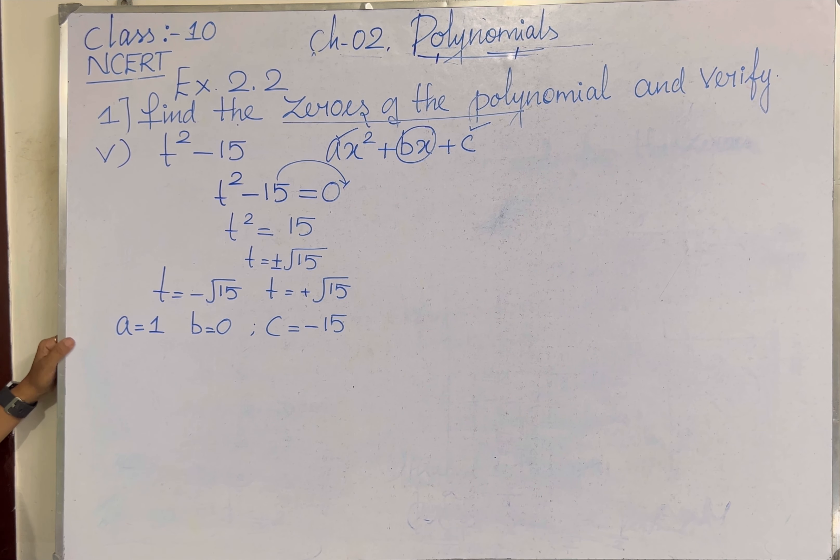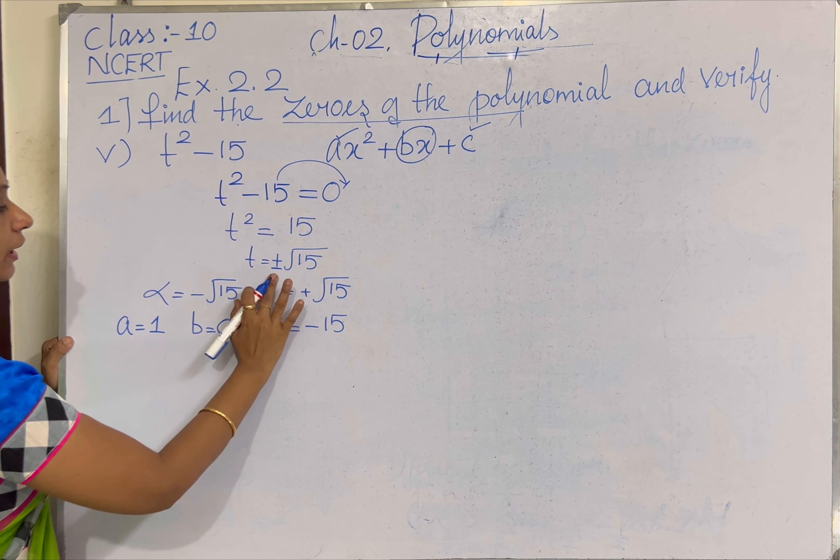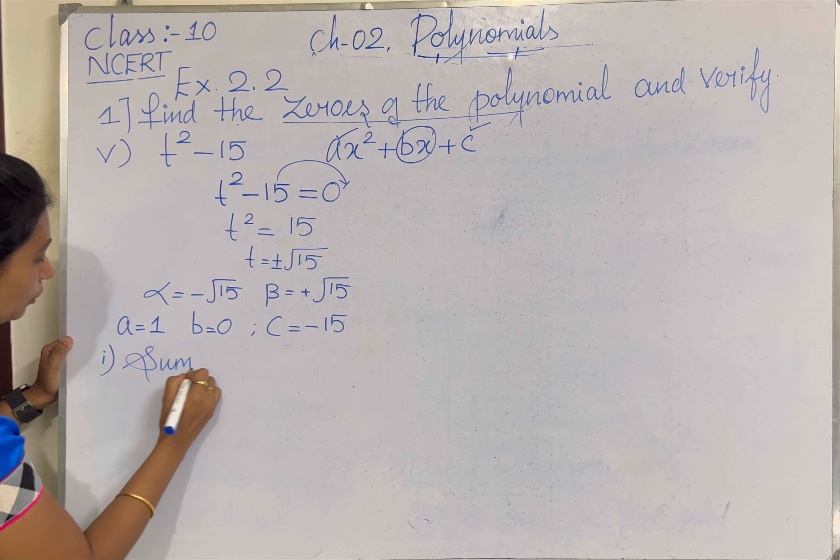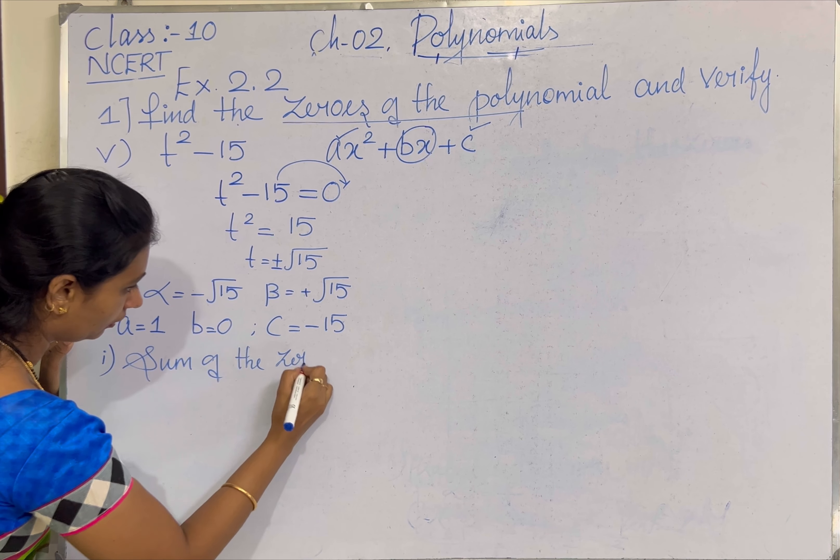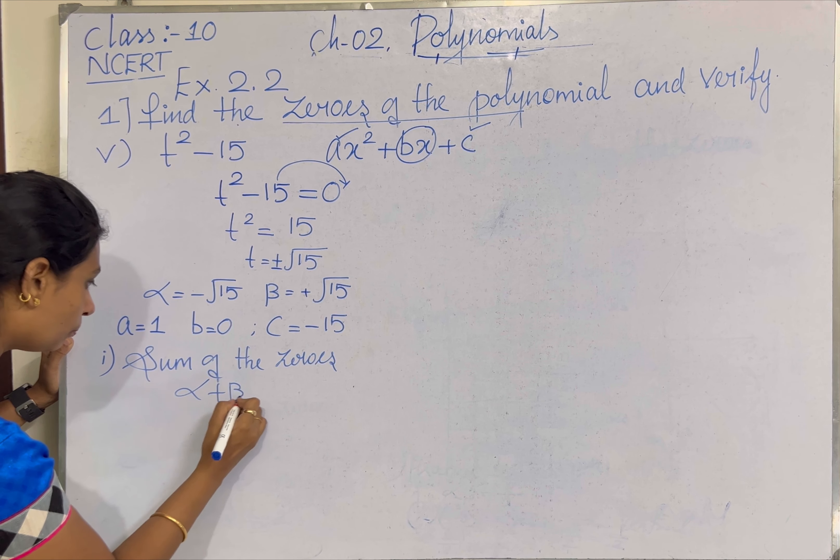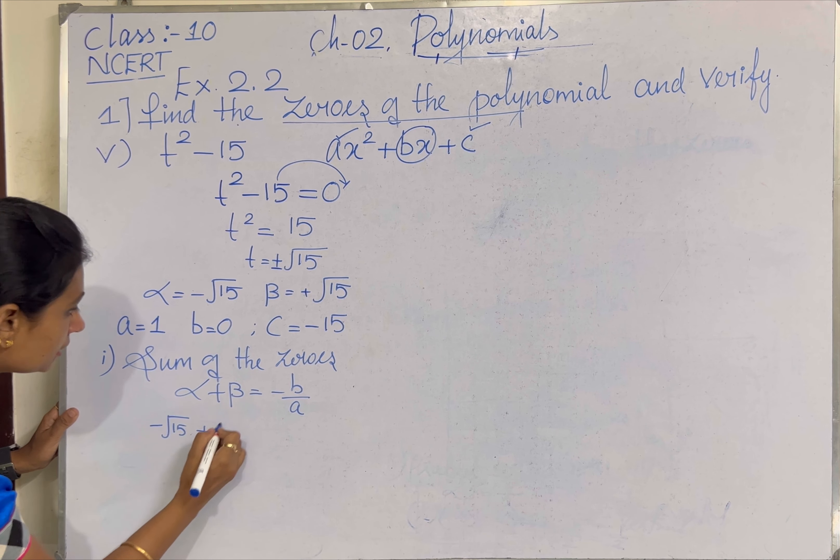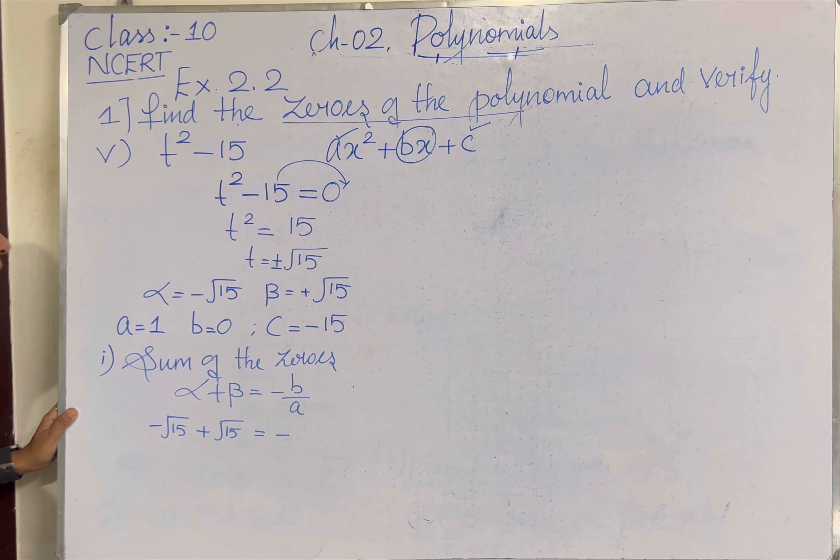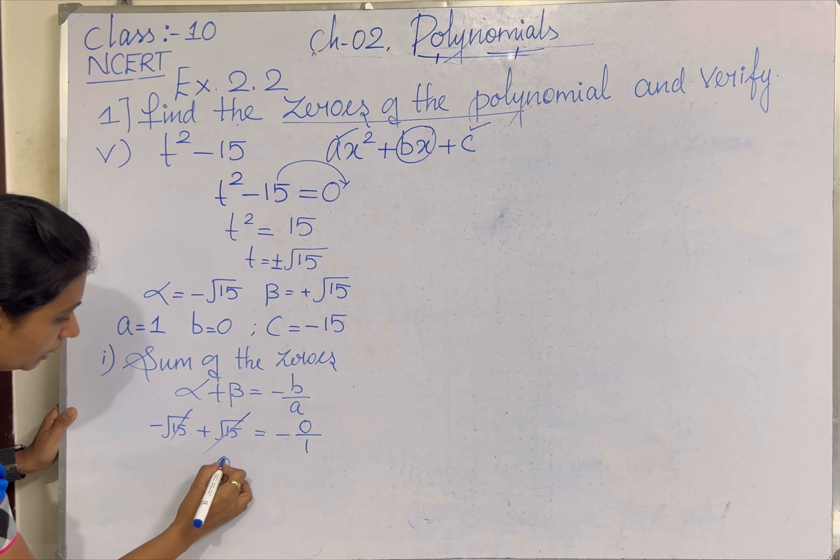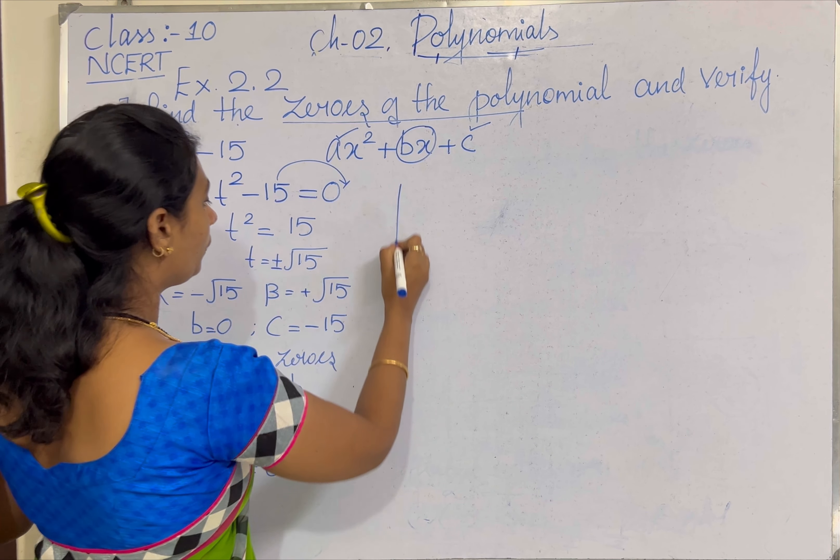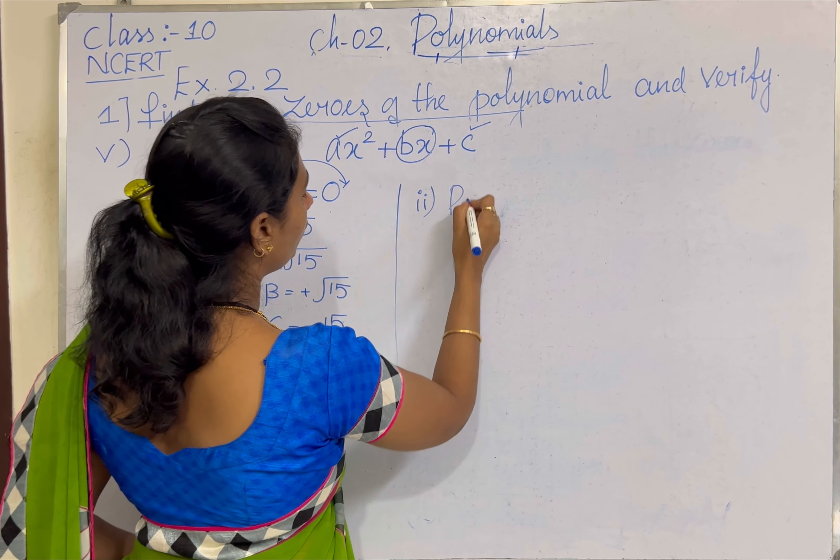We need to verify the relationship between alpha, beta and the coefficient of the polynomial. First thing we need to verify is sum of the zeros. Alpha plus beta equal to minus B by A. So minus root 15 plus root 15 equal to minus B value 0 divided by A value 1. Plus root 15 minus root 15 will become 0 on the left hand side. 0 by anything is 0. Hence we get that left hand side is equal to right hand side. We need to verify the second thing, that is product of the zeros.